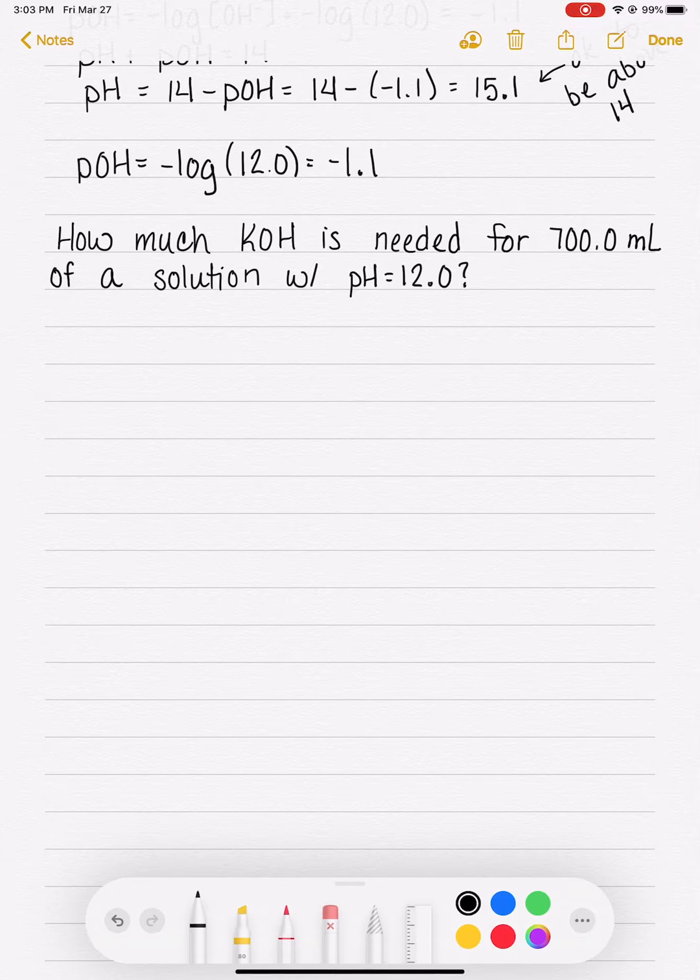So this question is saying, hey, I need to make a solution that has a pH of 12. I need 700 milliliters of this pH 12 solution and I want to use KOH to make my solution. So how much KOH do I need to put into this 700 milliliters to get a solution that has a pH of 12?